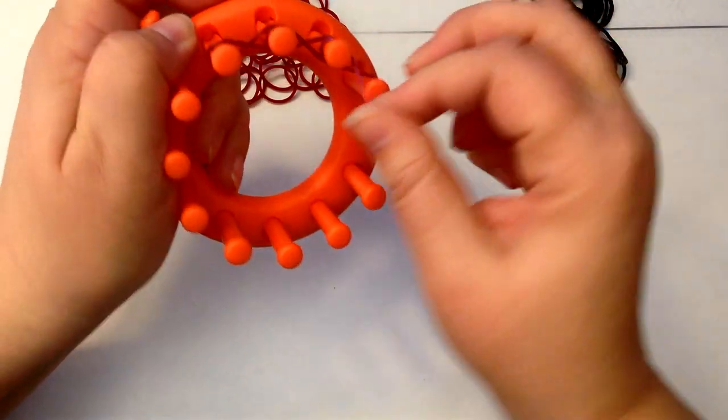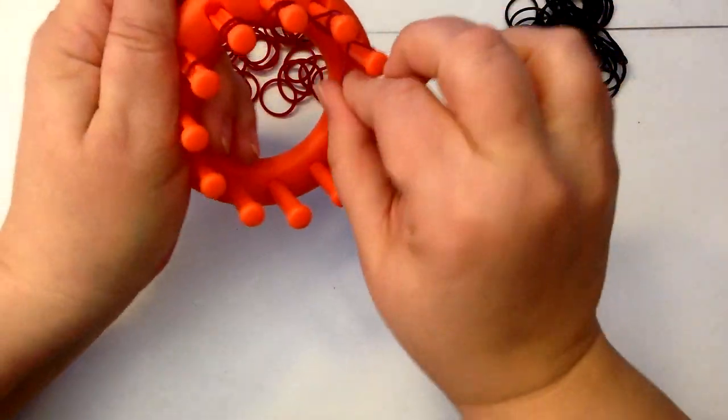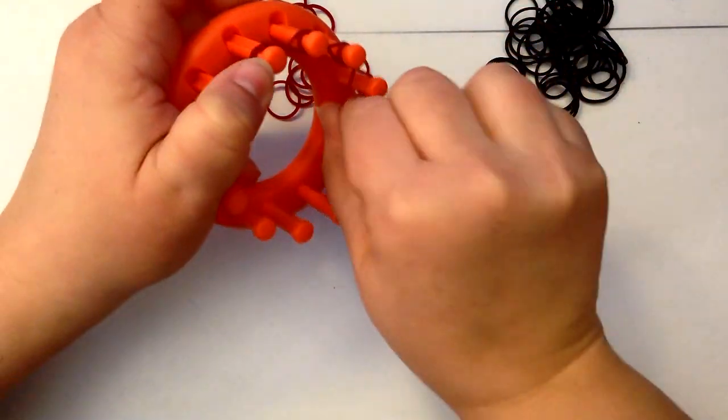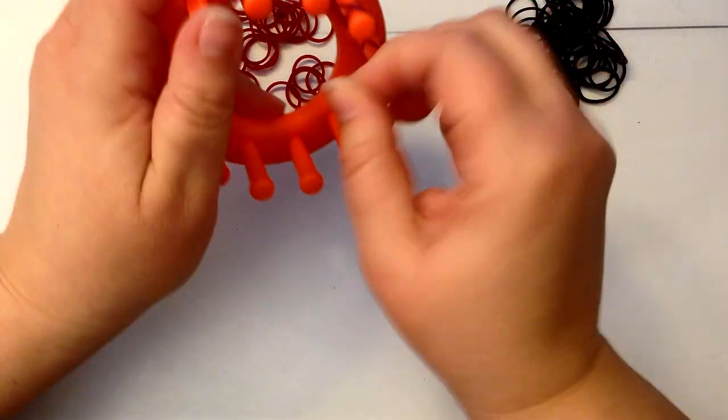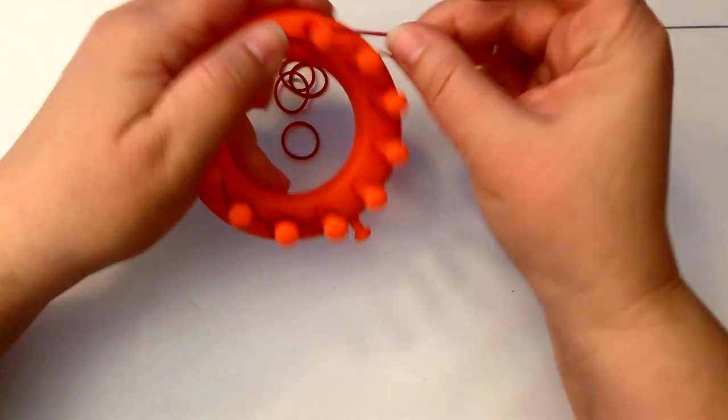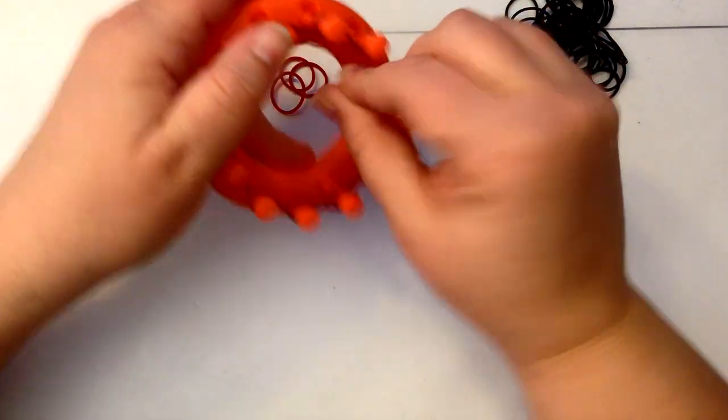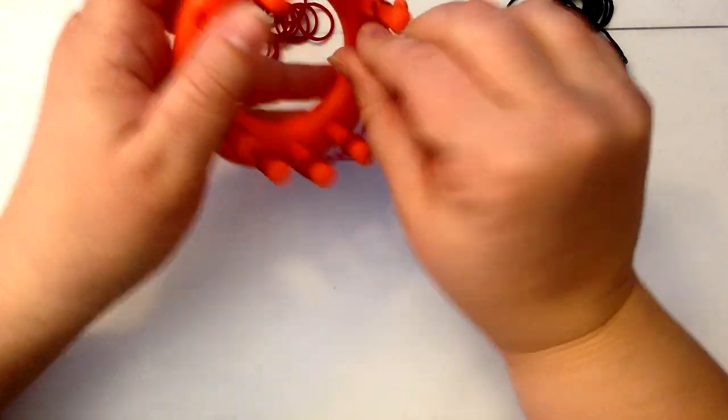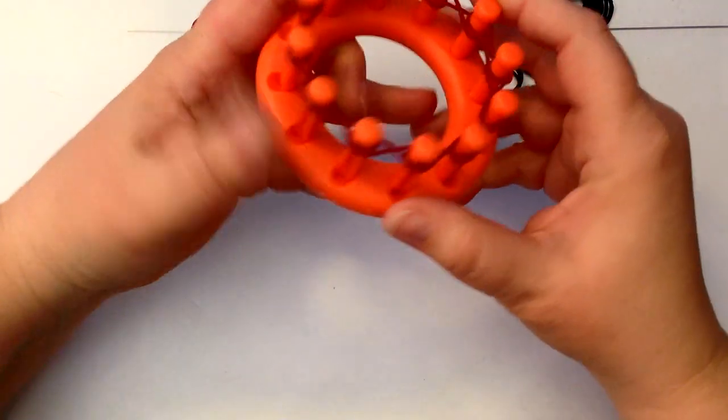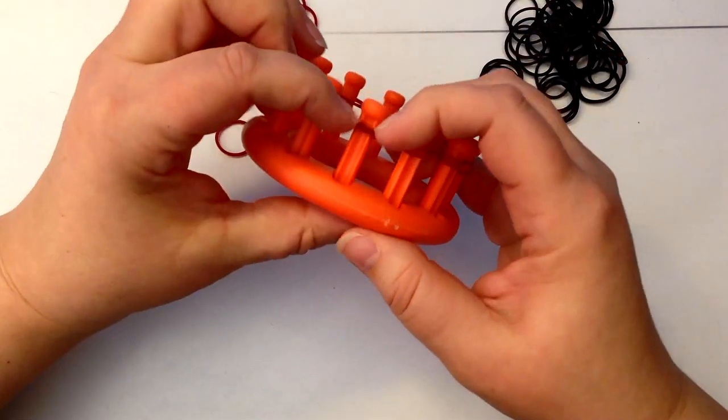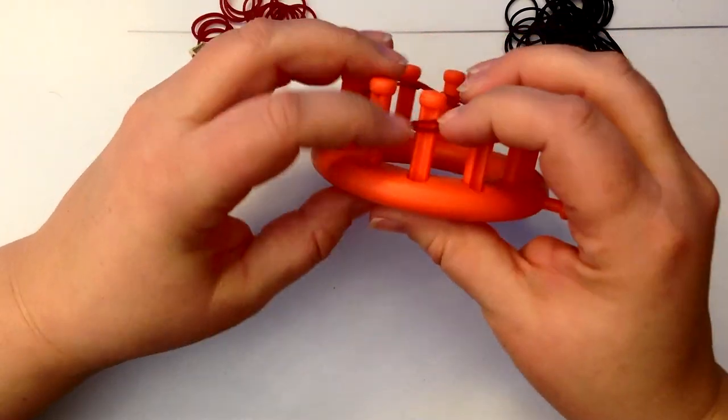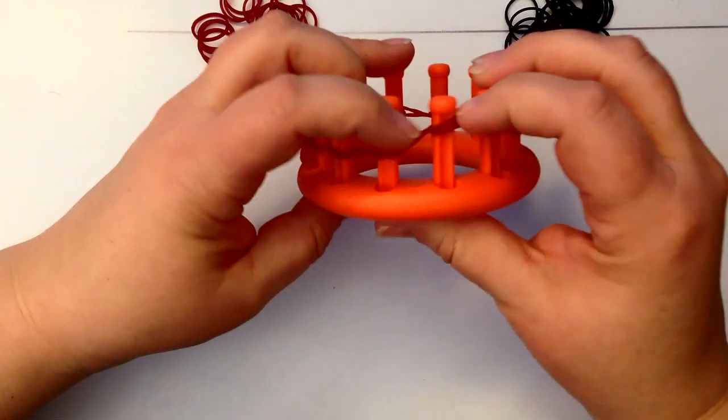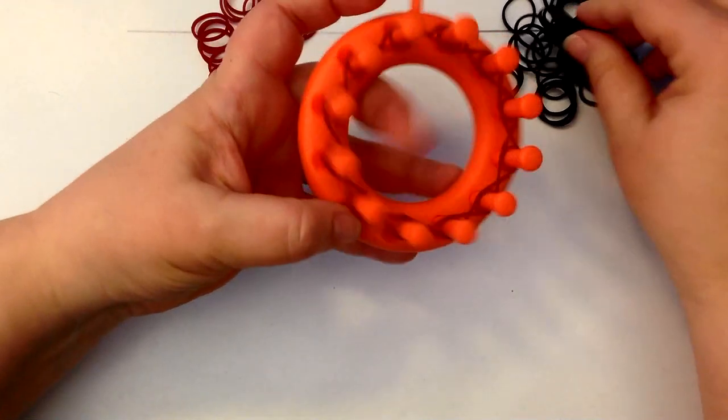Just like we would with our finger loom or our monster tail. You do a figure eight like this. Now, depending how tight you want your skirt or hat to be is whether you do two layers or three layers. Three layers will be tighter, two layers will not. Push these down just like you do with your monster tail. And then you're going to place your second round.